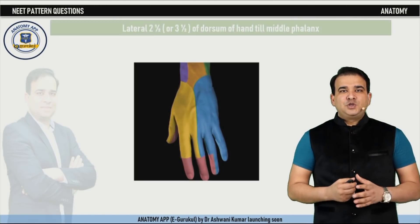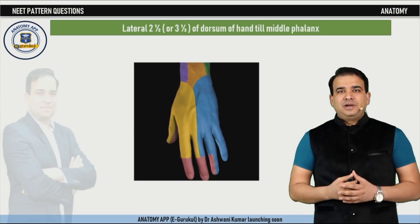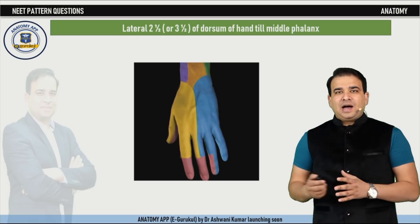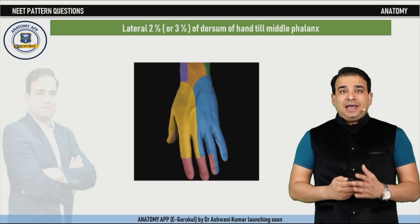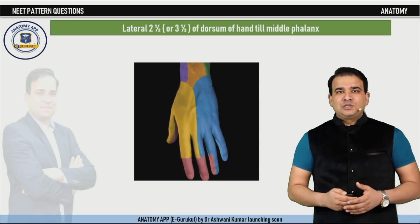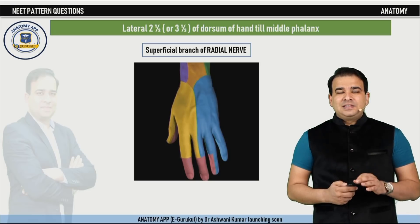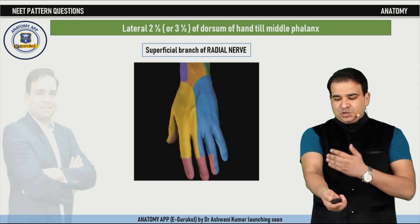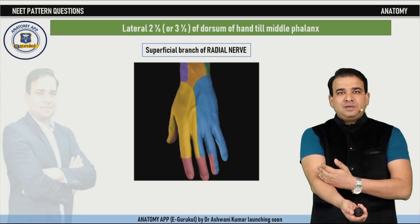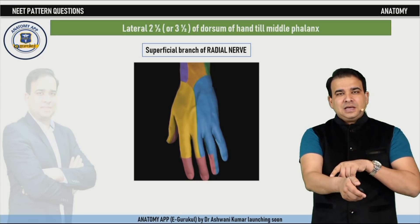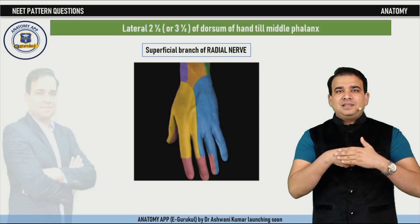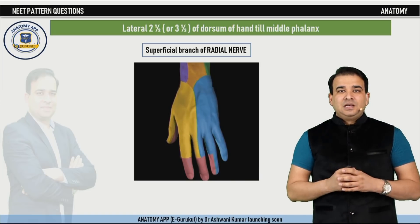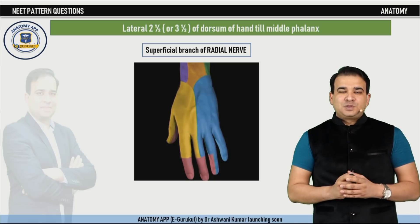This picture shows the dorsum of the hand with different colors indicating different nerve supplies. The area supplying the lateral two and a half digits — or sometimes three and a half — except the distal phalanx, up to the middle phalanx, is supplied by the radial nerve. Specifically, it is the superficial branch of the radial nerve, not the posterior interosseous branch. The superficial branch passes deep to the brachioradialis, superficial to the anatomical snuffbox, and then enters the dorsum of the hand to supply the skin. The highlighted yellow region is supplied by the superficial branch of the radial nerve.